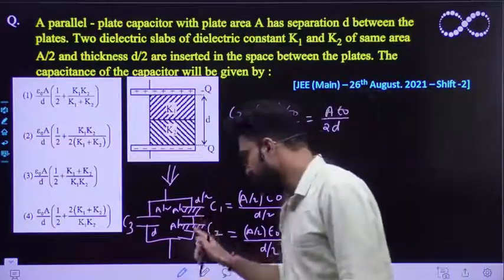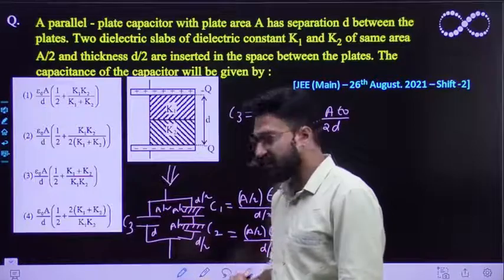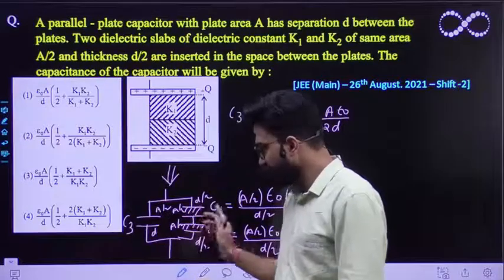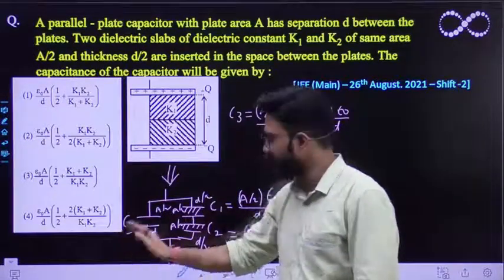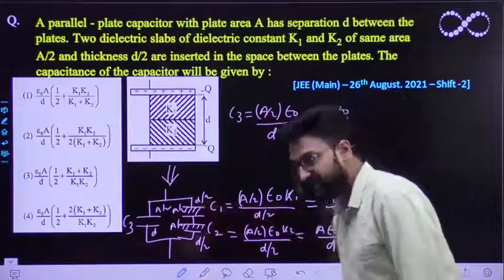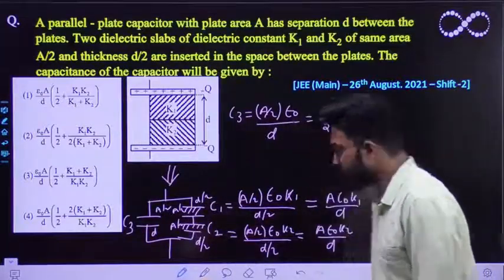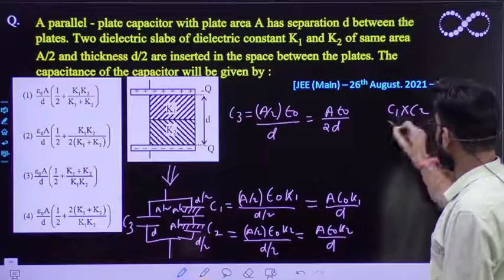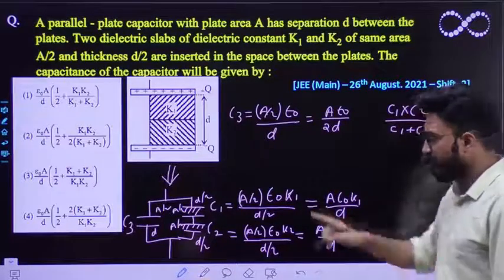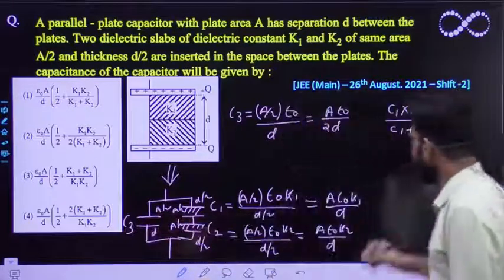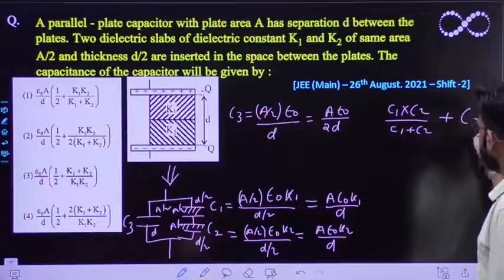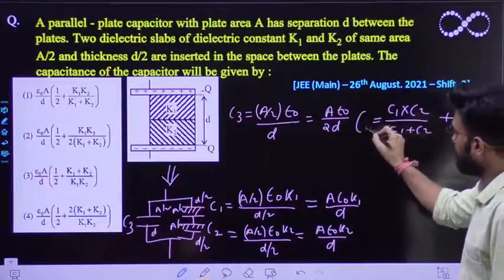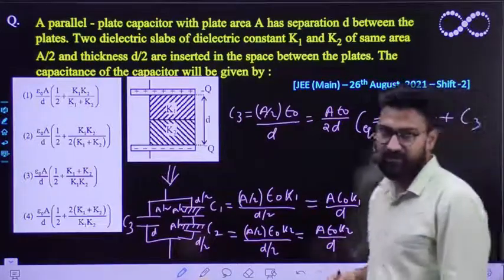Now, these two are in series. To again, ab yeh doonho series mein hai, in parallel with C3. To in doonho ka effective capacitance nikaal lo, because they are in series, to effective capacitance kitna nikalega? C1 C2 divided by C1 plus C2, yeh nikalega. It would be in parallel with C3. To iska effective capacitance iske saath C3 ke saath jude jayega. So this is the equivalent capacitance that you need to find out.